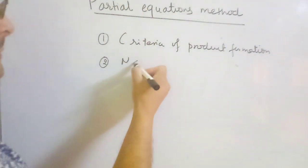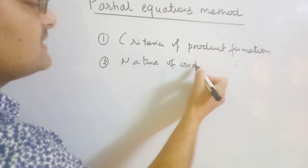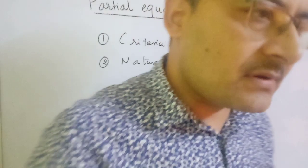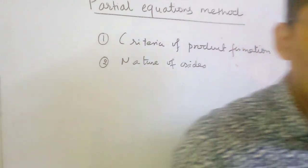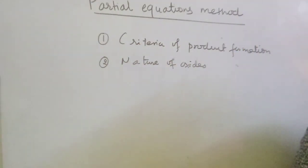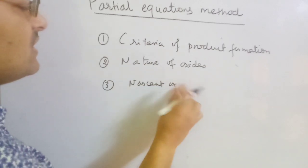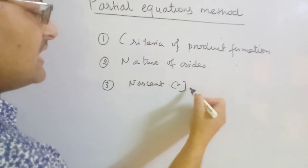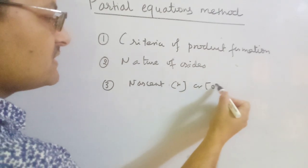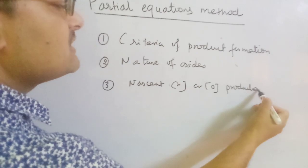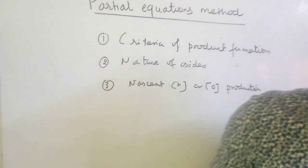Number two, you must know about the nature of oxides. If oxides are produced as a partial product in the main reactant, you must know what kind of nature that oxide has — whether it is acidic or basic. And number three, you must know about nascent oxygen or nascent hydrogen production — which one is produced in the reaction.